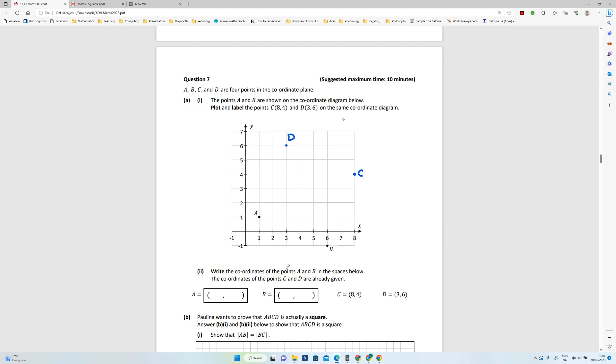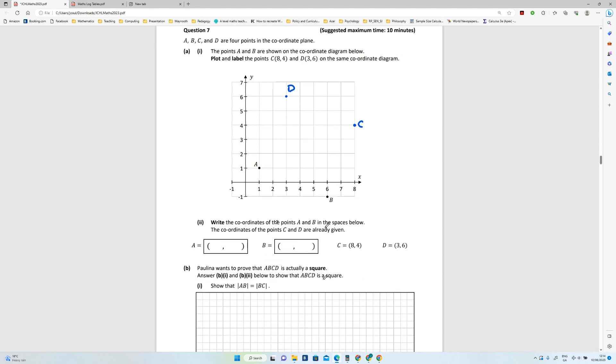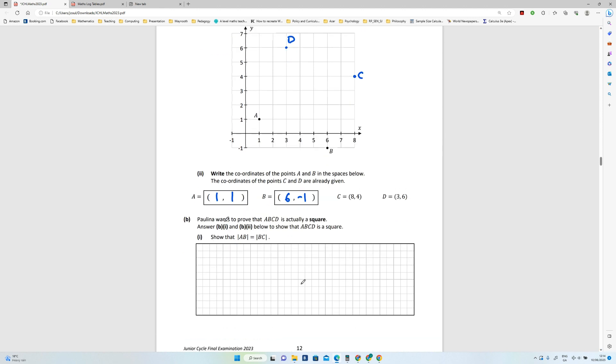Write the coordinates of the points A and B in the spaces below. So A and B. So A is one on the x and one on the y. B is six on the x and minus one on the y, and the other two are already filled in. Okay, so that's the first part.